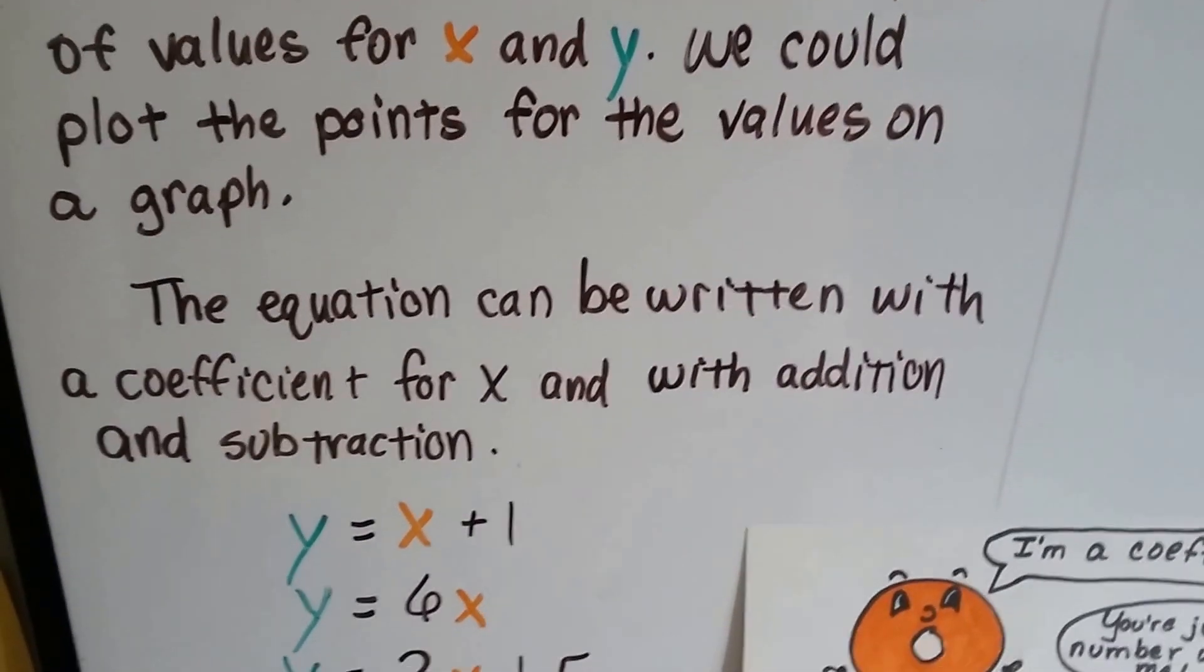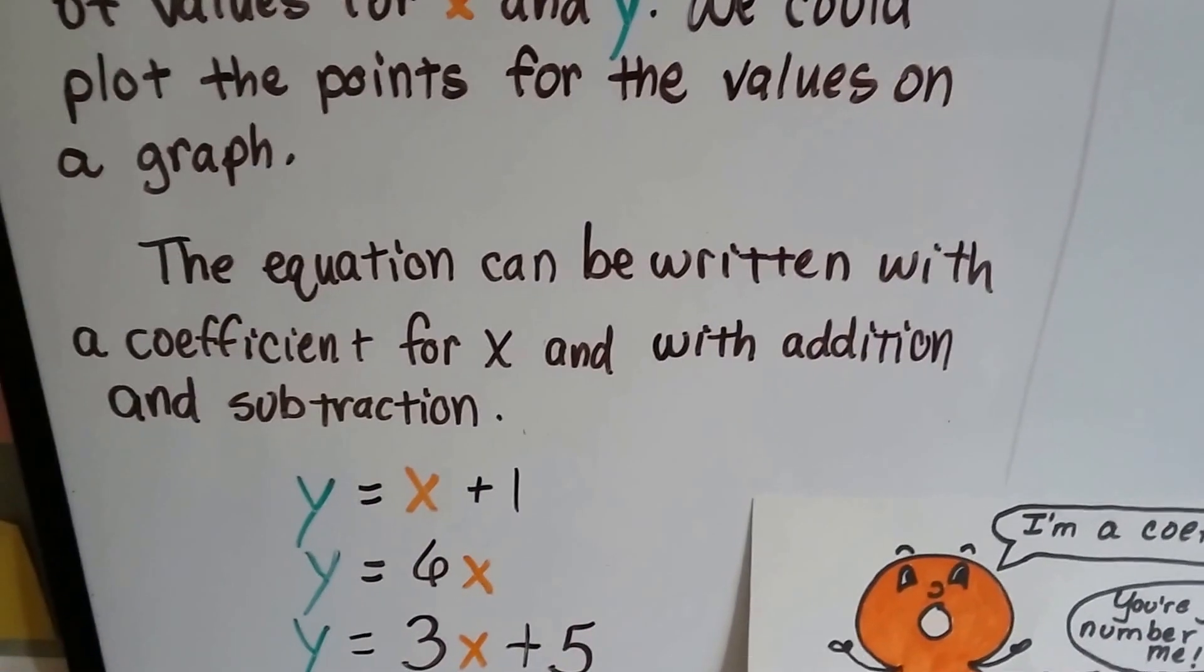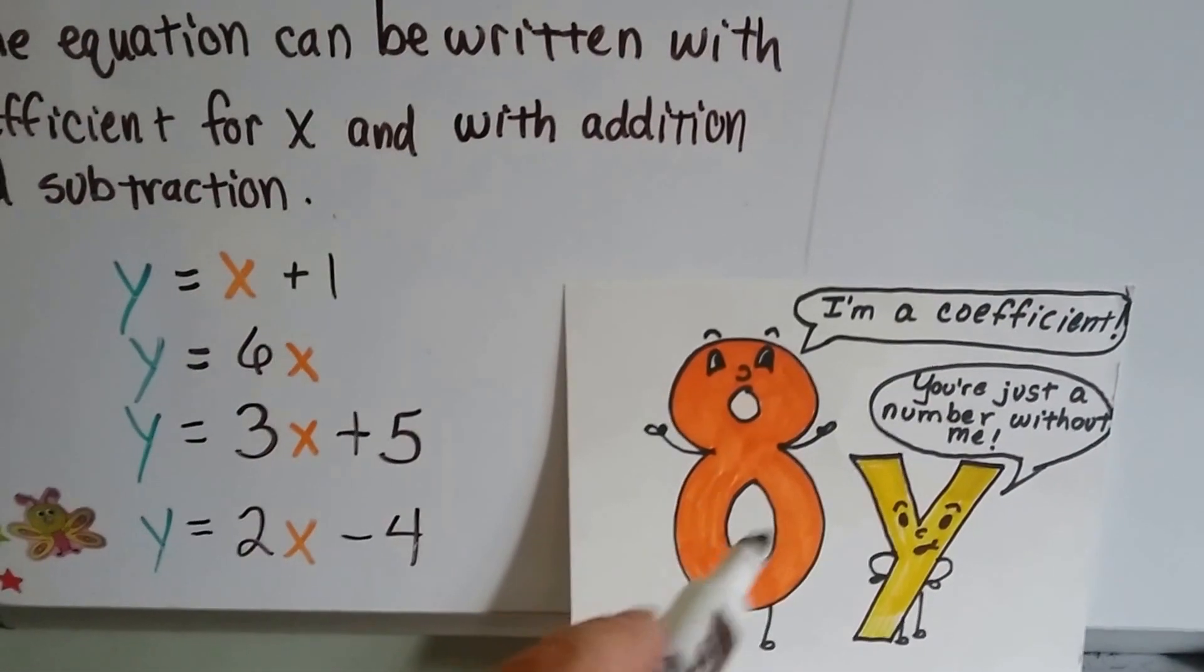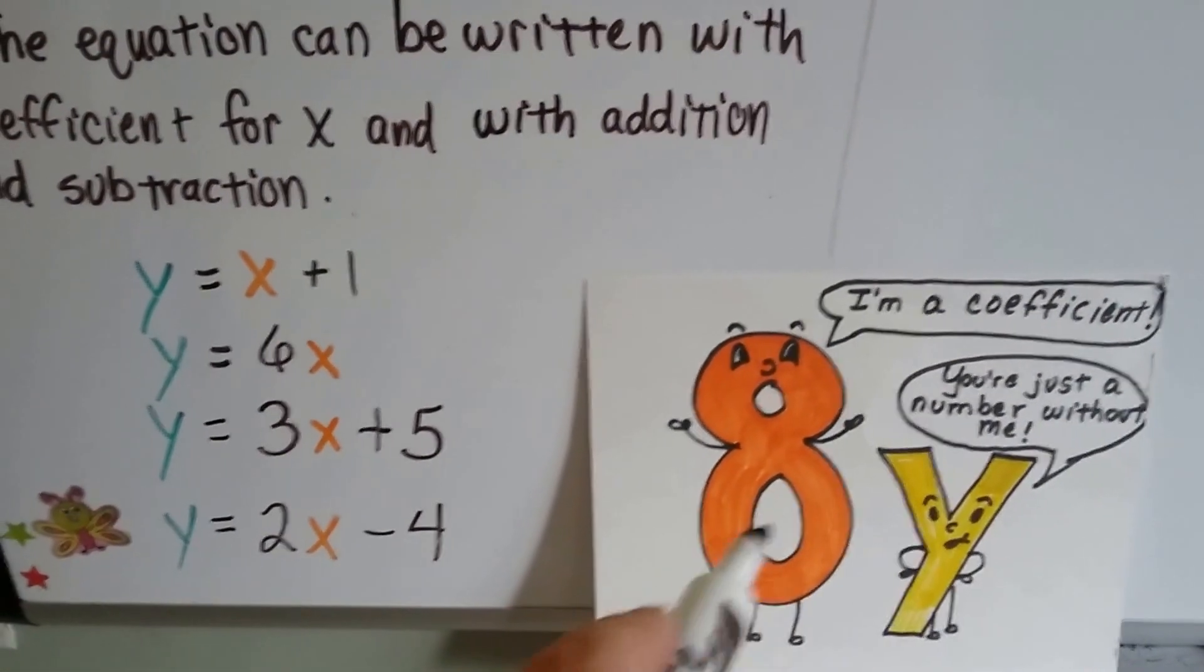The equation can be written with a coefficient for x and with addition and subtraction. You remember what a coefficient is, right? It's the number that's in front of the variable that we're going to multiply.